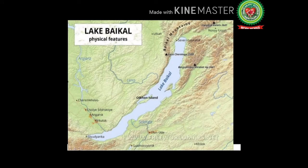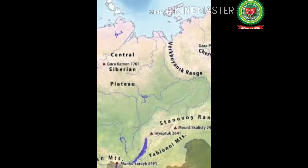Some important facts about the Siberian Plains: first, the world-famous Lake Baikal is situated in the Siberian region, and the river Angara drains from it. Lake Baikal is an ancient, massive lake in the mountainous Siberia region of Russia, north of Mongolia. It is considered the deepest and oldest lake in the world and the largest freshwater lake by volume, famous for its crystal-clear water and unique wildlife.